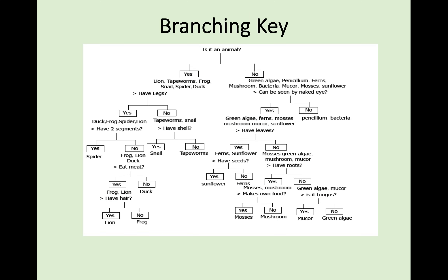A branching key has questions that branch out, and you answer yes or no — a binary answer — to each question to find out what organism you have. For example, if you're holding a plant, the first question might be 'Is it an animal?' — no. Then 'Can it be seen by the naked eye?' — yes. You follow the branches and eventually identify the organism. In exams, you may be given blank questions or answers to fill in.